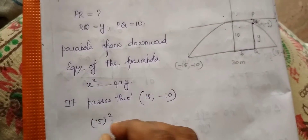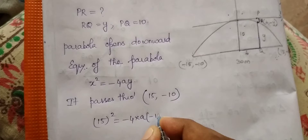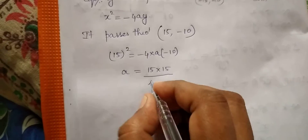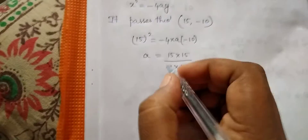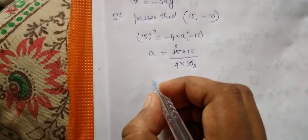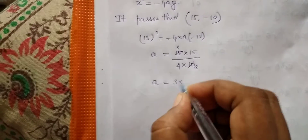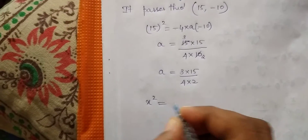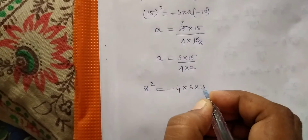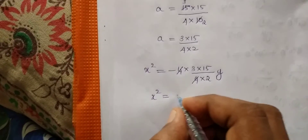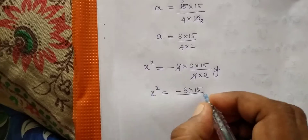Substituting the point (15, −10): 15² = −4 × a × (−10). So a = (15 × 15) / (4 × 10), where minus times minus gives plus. Simplifying: a = (3 × 15) / (4 × 2). Now substituting back into the equation: x² = −4 × (3 × 15)/(4 × 2) × y. Cancelling the 4s, our equation becomes x² = −(3 × 15)/2 × y.